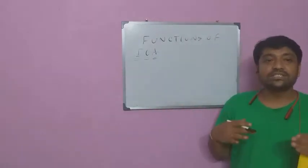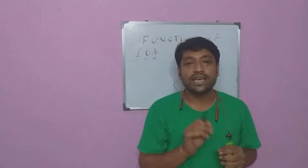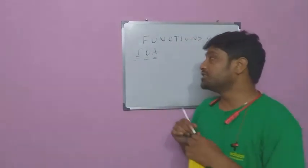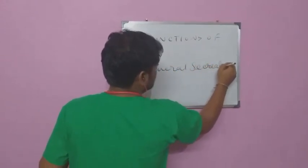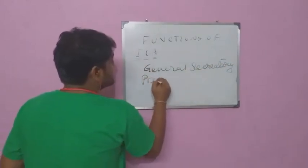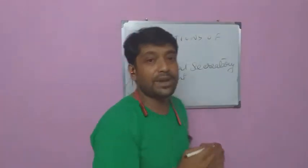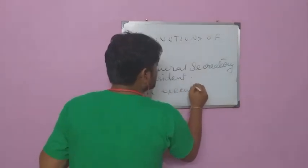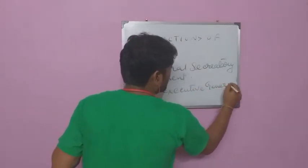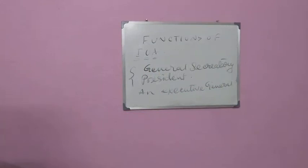The IOA coordinates the selection of athletes for the Olympic Games. It consists of a General Secretary, President, and Executive General. These are the main members of the Indian Olympic Association.